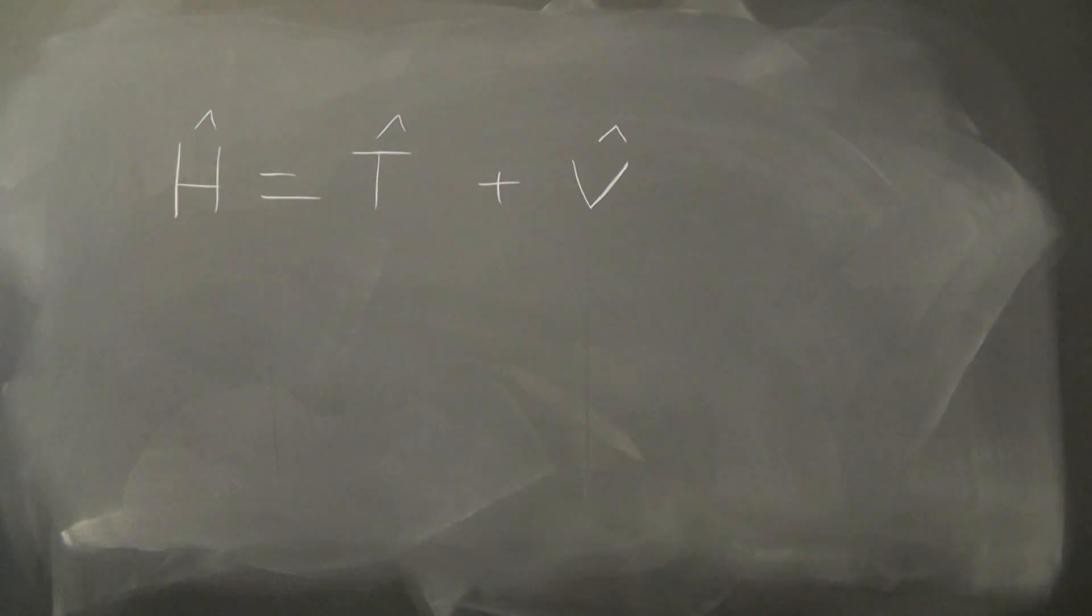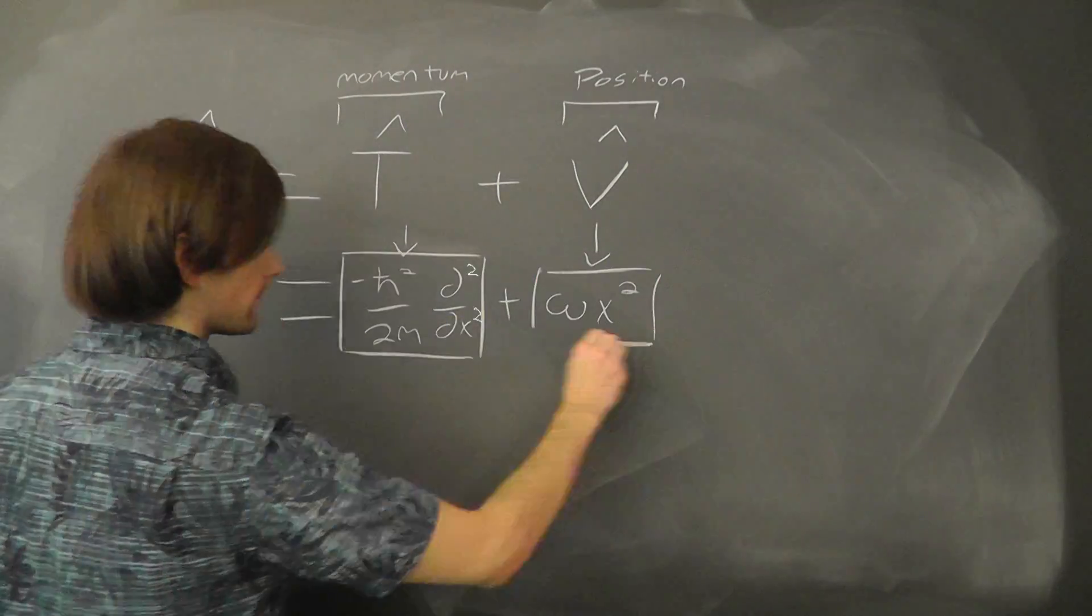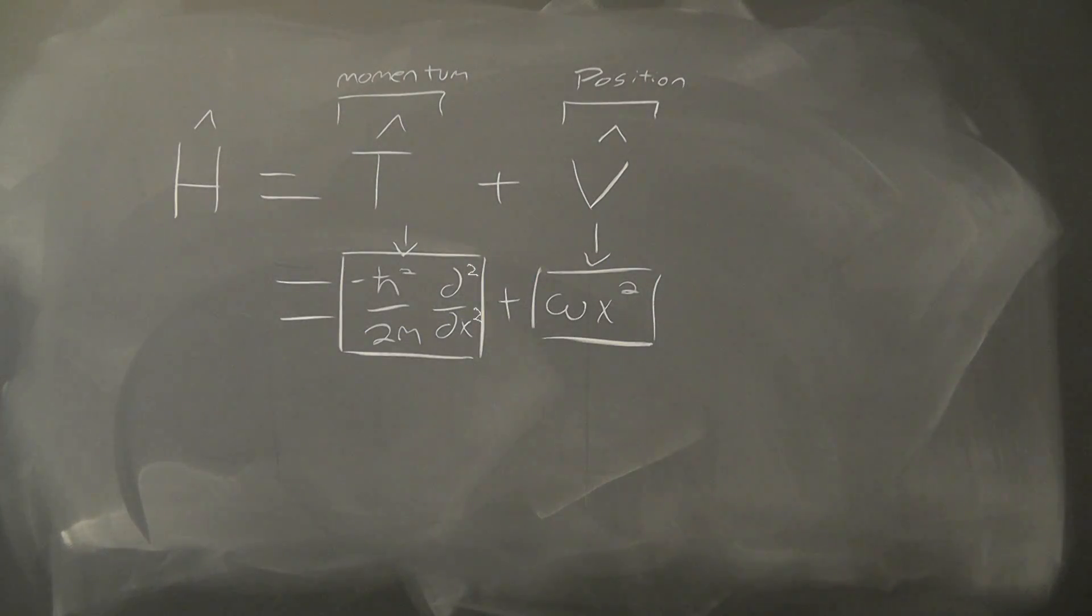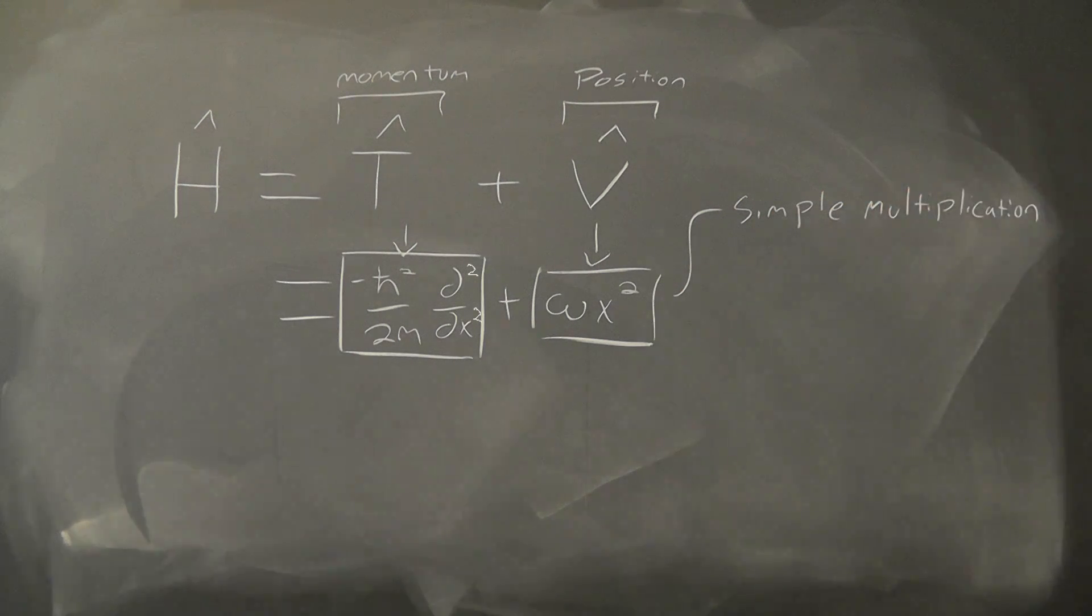The tricky part here is that this Hamiltonian can be split into two other operators, one for position space and another for momentum space. The position space operator has a straightforward implementation and interpretation. You simply multiply your wave function by some function in position space, and it acts as some potential well.